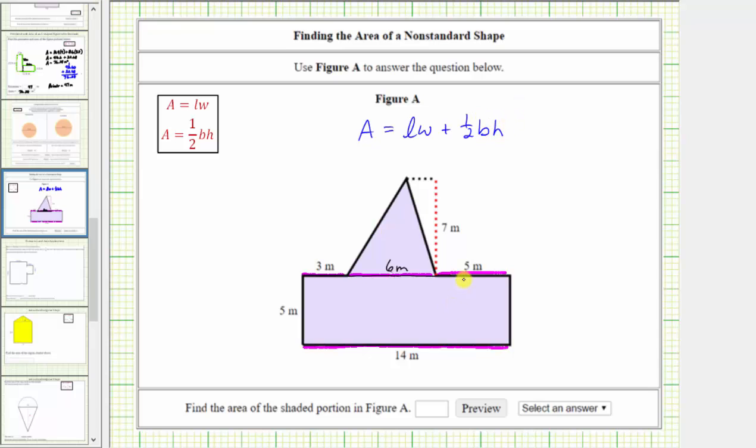Going back to the polygon, notice how the length of the rectangle is 14 meters, the width is 5 meters. Looking at the triangle, the base is 6 meters and the height is 7 meters. This is all the information that we need.